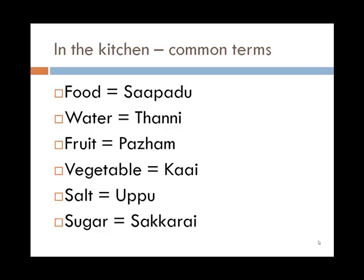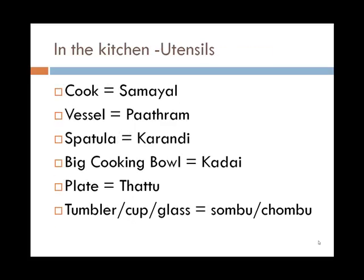Food is generally called saapahadu. Water is tanni. Fruit is param — note the 'ra' sound, so param. If you really can't pronounce it, it's okay to say param. Vegetable is kai, salt is uppu, and sugar is sakarai. Generally, to cook or cooking is referred to as samayal. Vessel is patram, a spatula or big spoon is karandi, and a big cooking bowl is kadai.